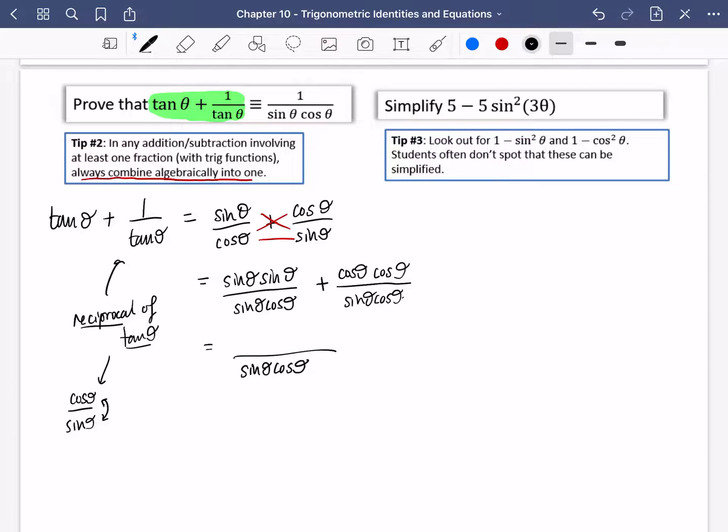Now they have a common denominator. I can just write them as one fraction. So it's sin θ cos θ, and on the top I have sin squared θ plus cos squared θ. Now sin squared plus cos squared θ, you should have memorized this, is 1. So you get 1 over sin θ cos θ, which is the thing that we were trying to prove. So we have shown that the left-hand side is equal to the right-hand side over here.